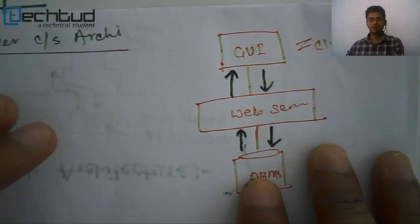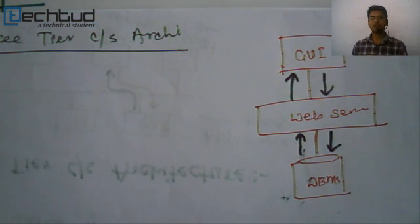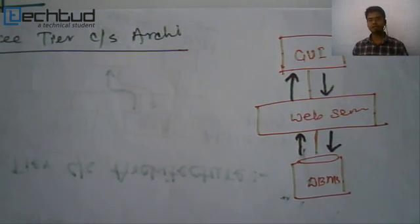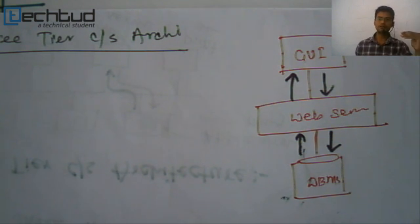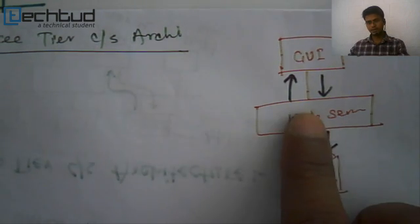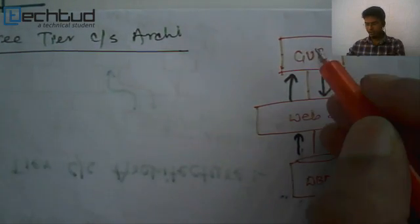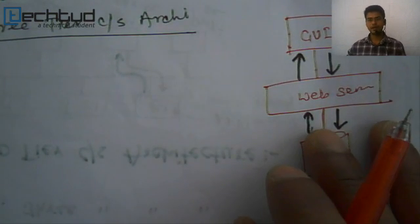To revise: in two-tier architecture we keep all organization on two levels, and ODBC connectors are used to connect with the database. In three-tier architecture we have three levels — first level is the client or GUI, second level is the web server, and the third level is the database server. The client makes a request to the web server, the web server makes a request to the database server for data, the database server replies to the web server, and the web server replies back to the GUI. This is all about database architecture. If you have any doubts, please ask questions in the doubt section. Thank you.